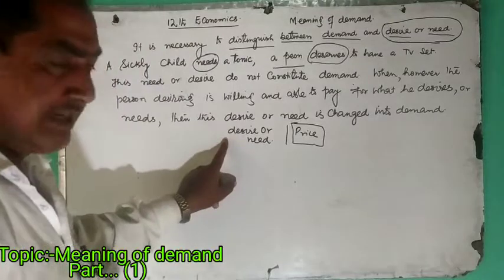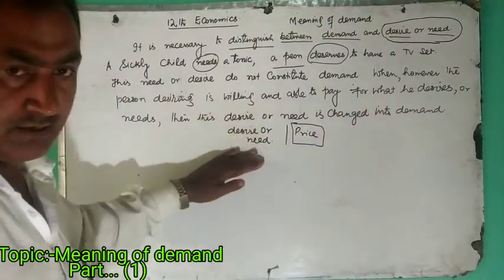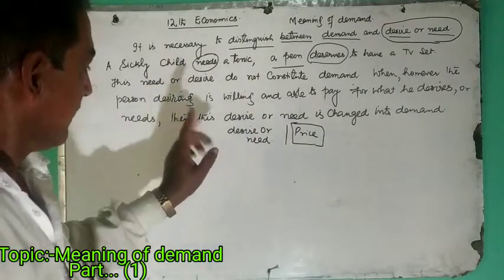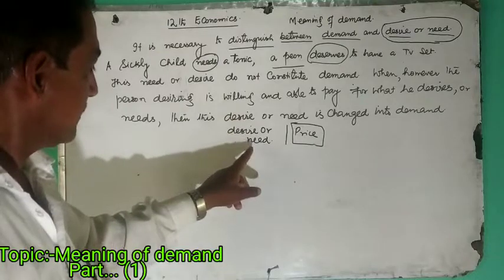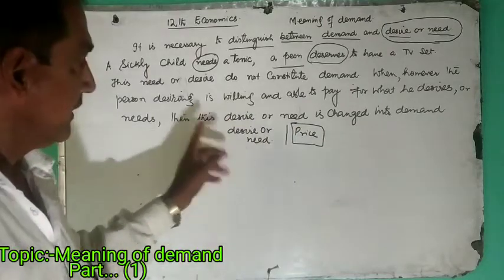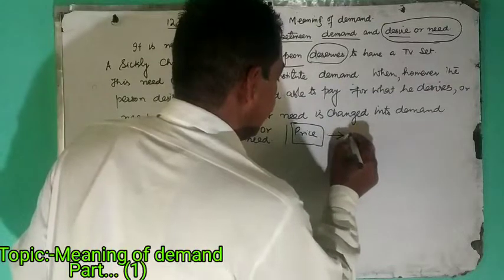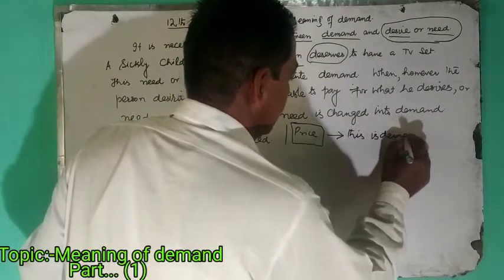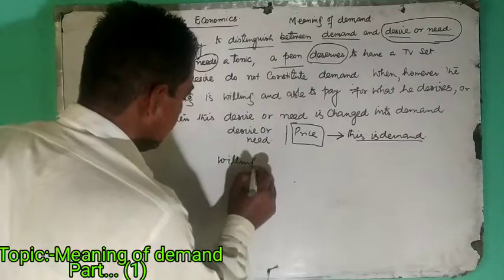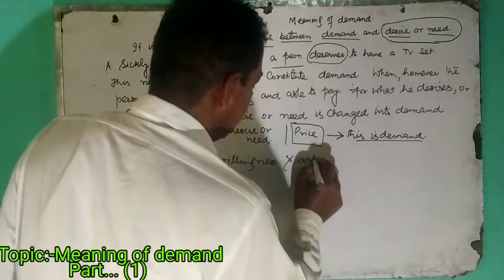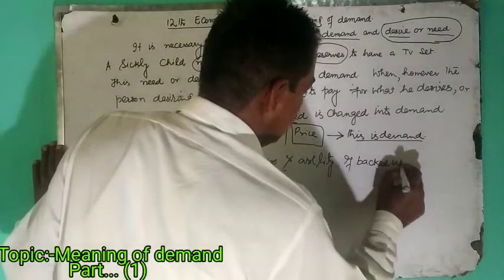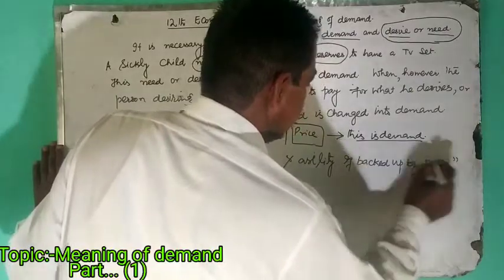If these persons have desire or need, but they are not willing and not able to pay for the price of the commodity, we say that this is not demand. When the person who desires or needs the tonic is willing and able to pay for the price of the commodity, it is then said that this is demand. Therefore, willingness and ability, if backed up by price, we say that this is demand.